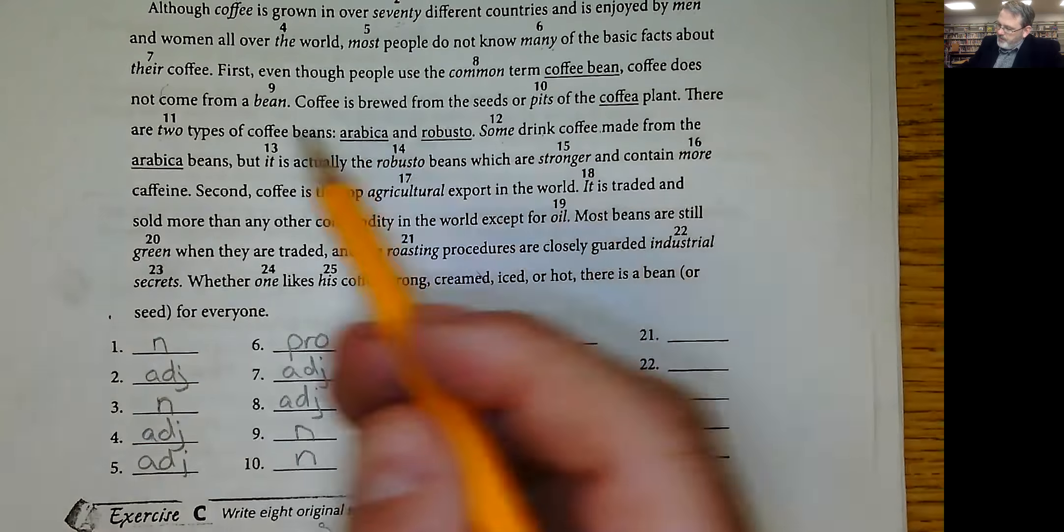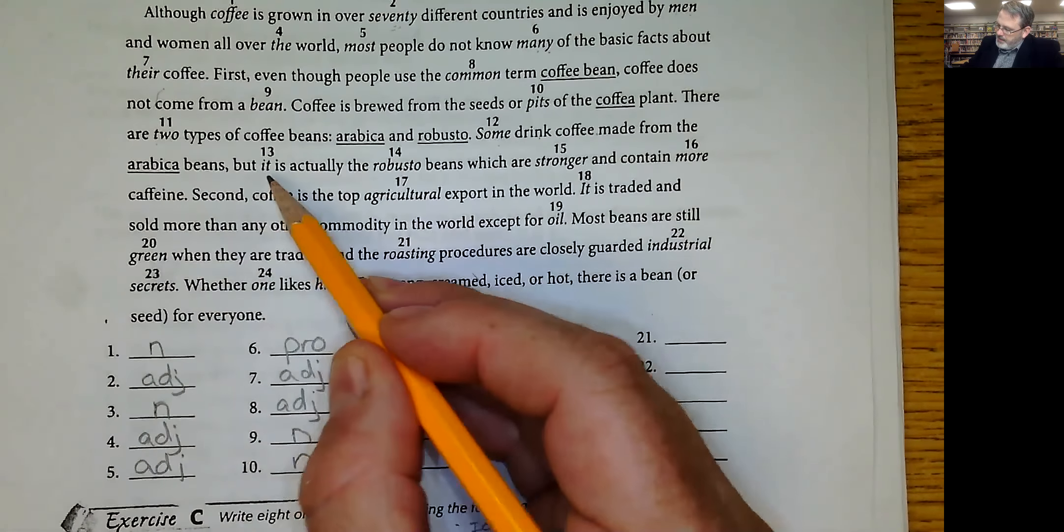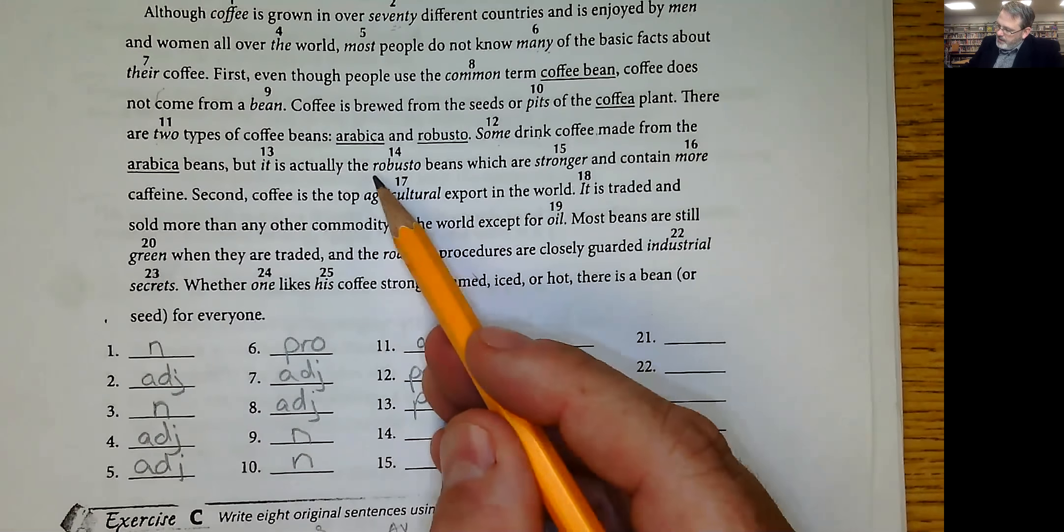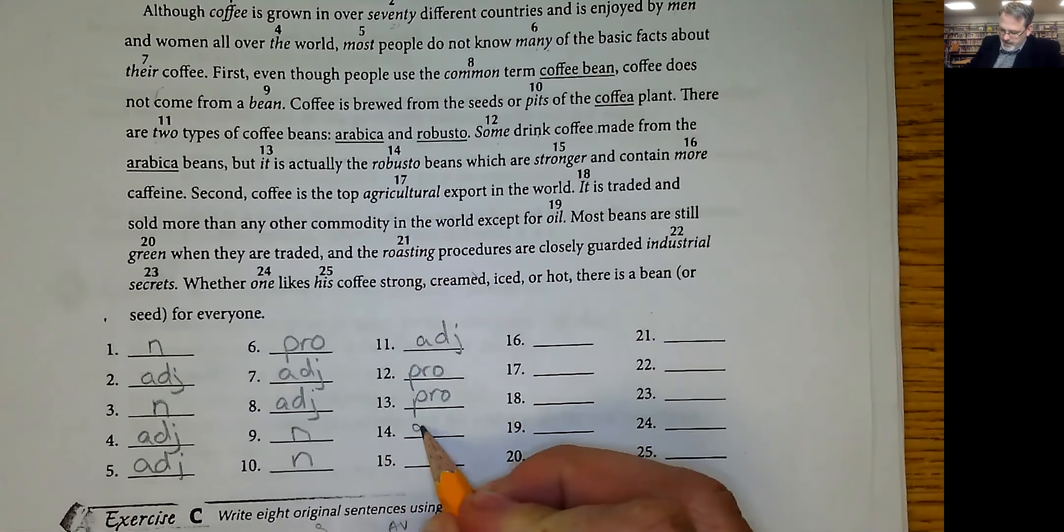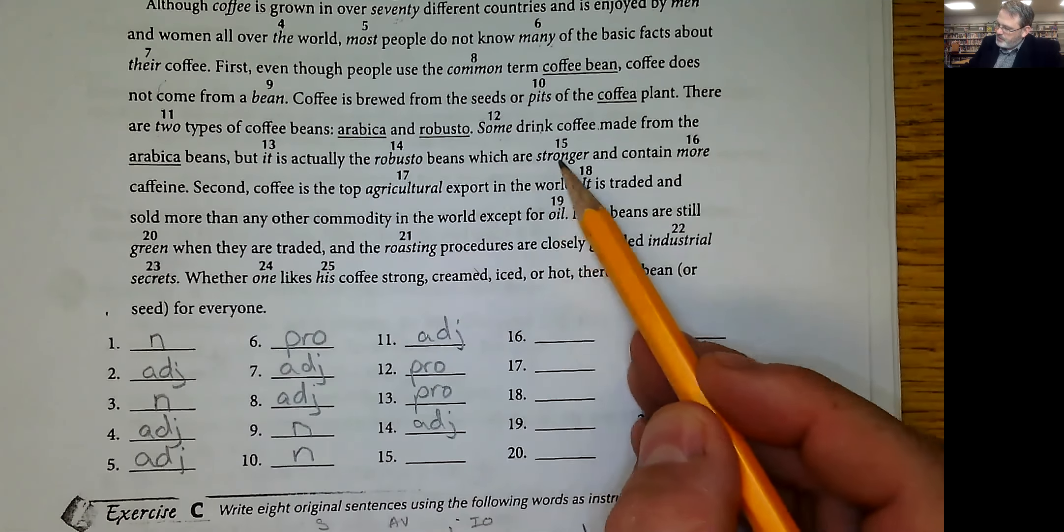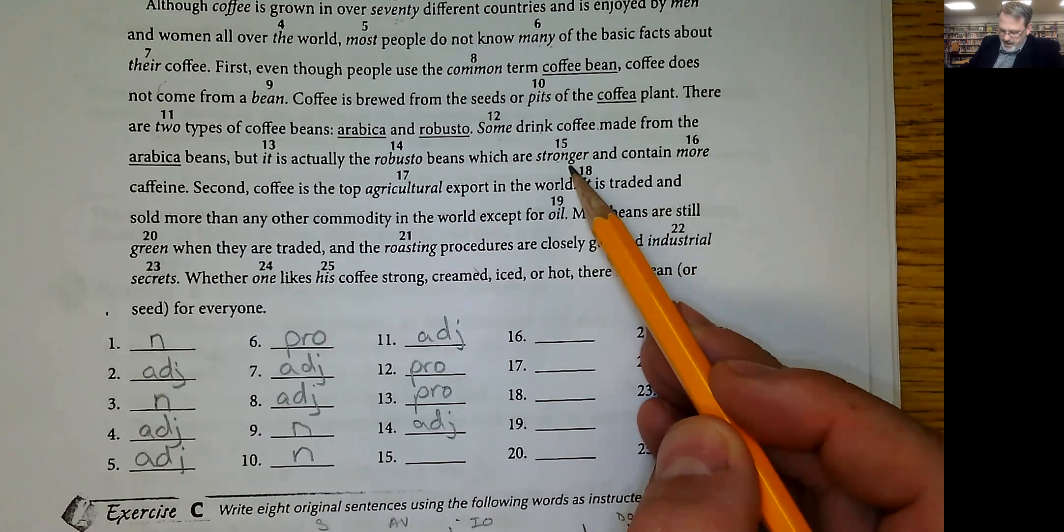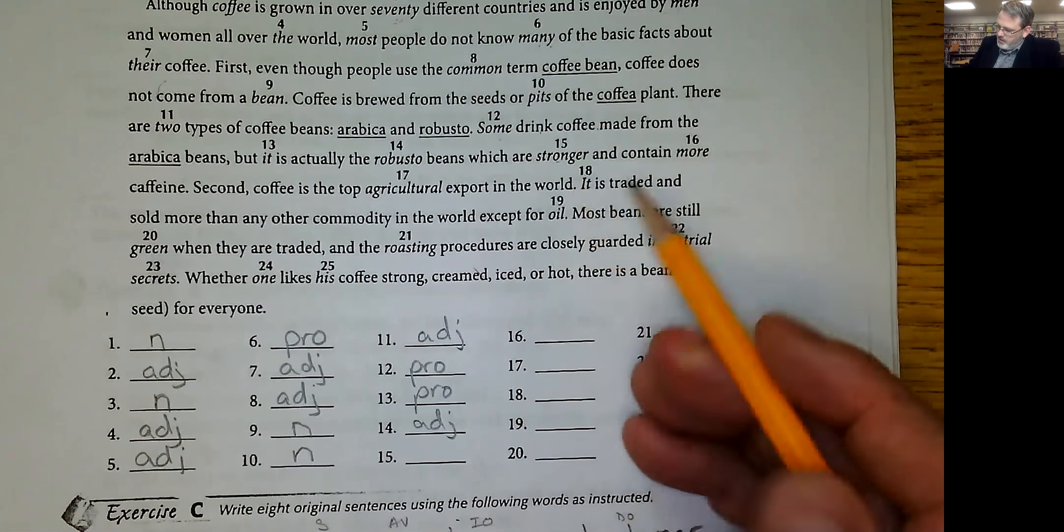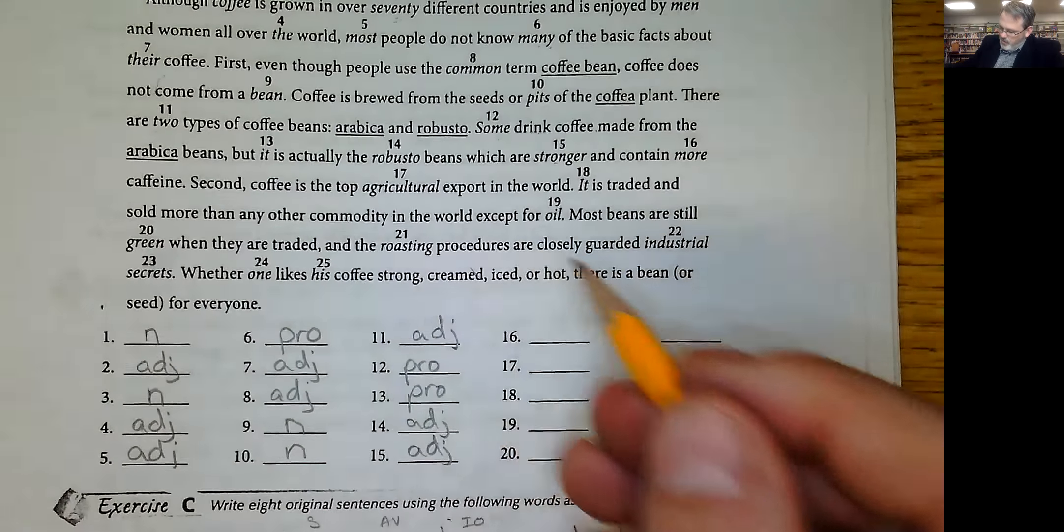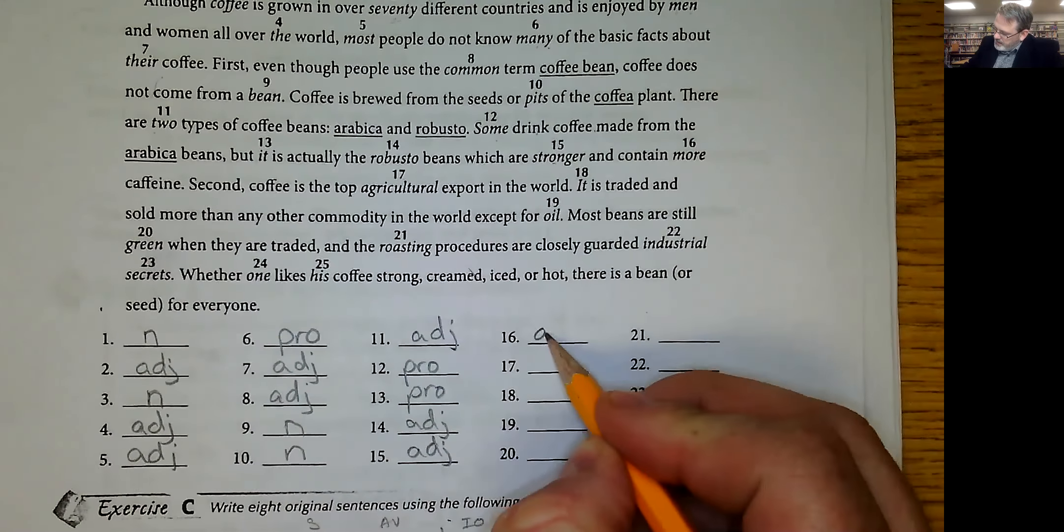Made from the arabica beans, but it, that's a pronoun. Is actually the robusto beans, that's an adjective. What kind of beans? Robusto beans, which are stronger, that's an adjective as well. Stronger, and contain more caffeine, adjective again, lots of them. How much caffeine, more caffeine.